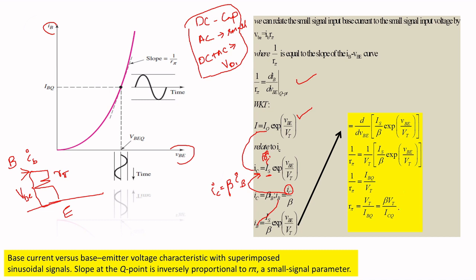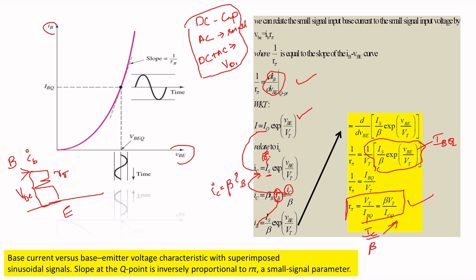Differentiating to find r_pi step by step: dib/dvb = (Is/β) × exp(vb/Vt), so 1/r_pi = (1/Vt) × (Is/β) × exp(vb/Vt). The entire term (Is/β) × exp(vb/Vt) equals IBQ, so 1/r_pi = IBQ/Vt, giving r_pi = Vt/IBQ. Since ib = ic/β, substituting gives r_pi = βVt/ICQ.